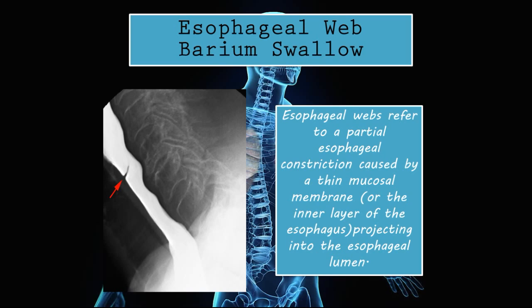Esophageal webs on barium swallow: esophageal webs refer to a partial esophageal constriction caused by a thin mucosal membrane — the inner layer of the esophagus — projecting into the esophageal lumen. Anatomically, the esophagus is made up of four main layers: the mucosa, the submucosa, the muscular layer, and the adventitia.